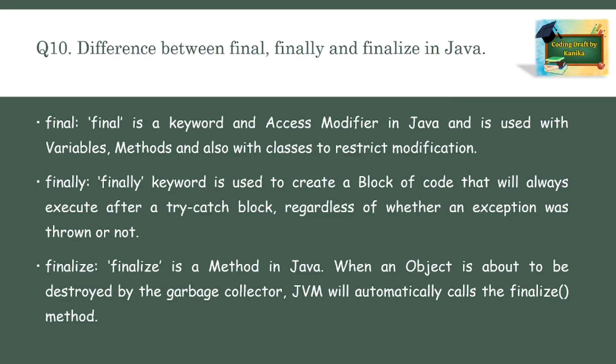'finally' is a keyword used to create a block of code. The finally block always runs after a try block, no matter what happens, whether an exception was thrown or not. 'finalize' is a method in Java, opposite to initialization and similar to destructors in C++. When an object is about to be destroyed by the garbage collector, the Java Virtual Machine automatically calls the finalize method.